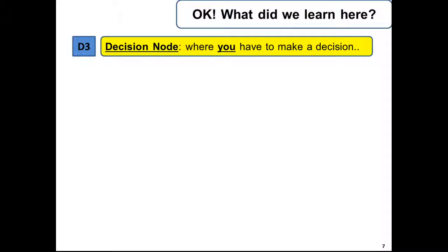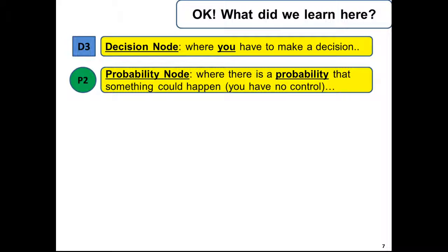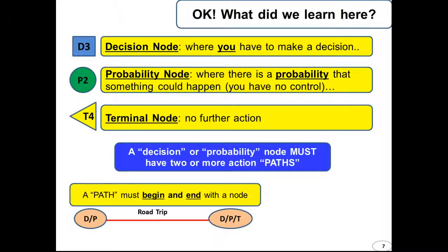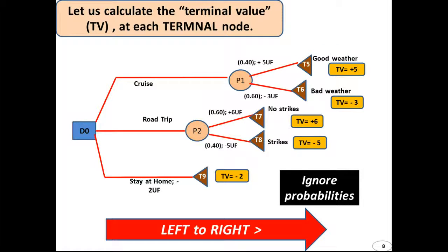Decision node is where you have to make a decision and it's a square node. A probability node is where there is a probability that something could happen and you have no control. In the decision node you have the control. In the probability node you have no control. There is a probability that something could happen. We use a circle. And the terminal node is where we have no further action.